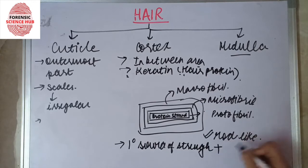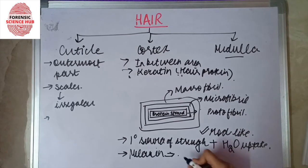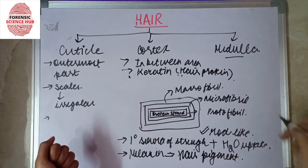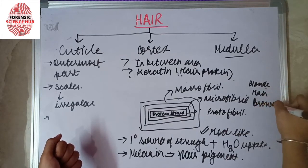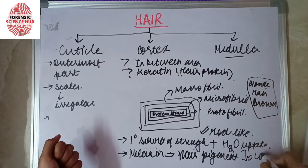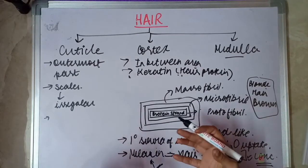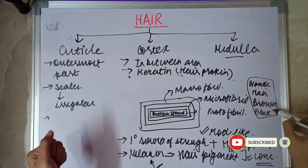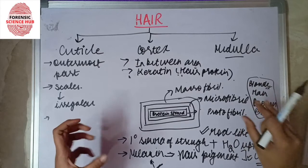The cortex is also responsible for water uptake. Another important component present in the cortex is melanin, which is the hair pigment responsible for different shades of hair color. We have blonde, pure black, and brown — these colors result from different concentrations of melanin. If there is more melanin, the hair will be black; if less, brown; and if even less, blonde.